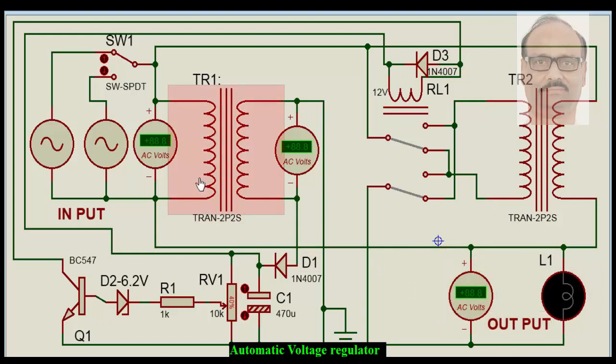So at the time of switch-on, this setting is done once for all. It's not going to be changed. Based on the input variation, either this zener diode will conduct or the zener diode will not conduct. If the zener diode conducts, something happens. If the zener diode doesn't conduct, something happens.